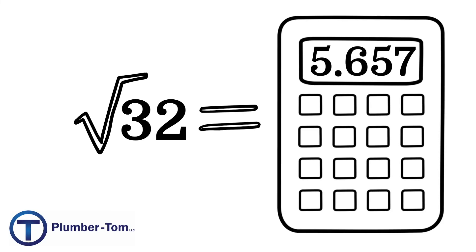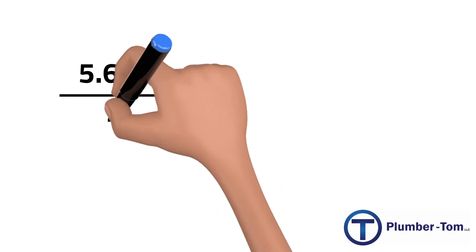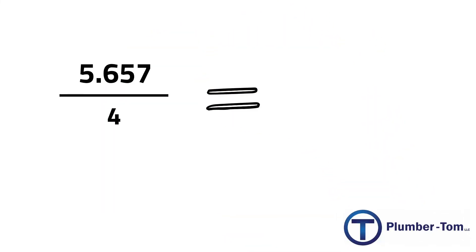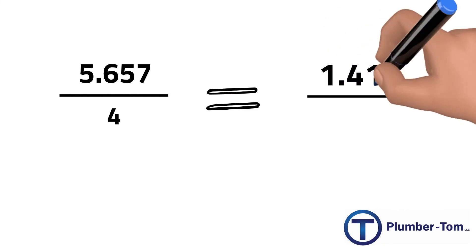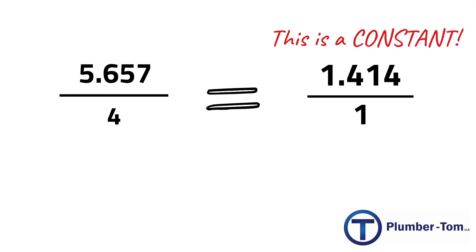Now that we have our diagonal, we can take that 5.657 and divide it by 4 in the ratio we examined before. Amazingly, this comes out to 1.414 or 1.414 over 1. This is our constant.